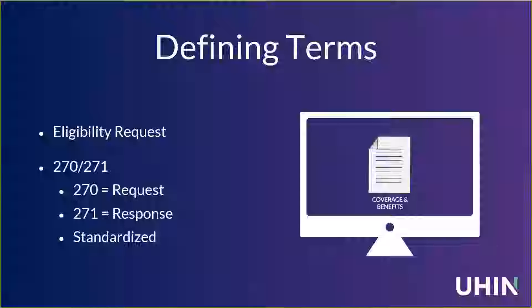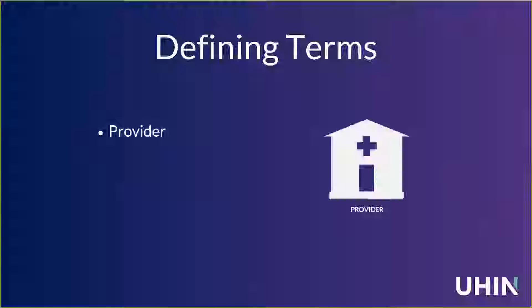Let's talk about the players involved in this request-response. The first is the provider — and when I use that term today, I'm including hospitals, doctor's offices, labs, DME, assisted living, and all places providing a service for medical reimbursement. For today's purposes, I'm assuming it is the provider creating the 270, the electronic eligibility request. So when I talk about the sender or the requester, I'm really talking about the provider.